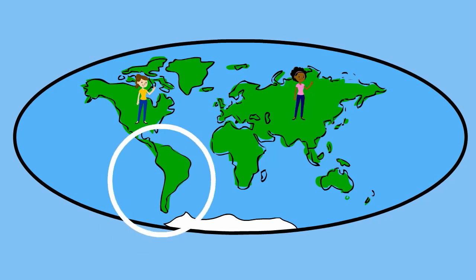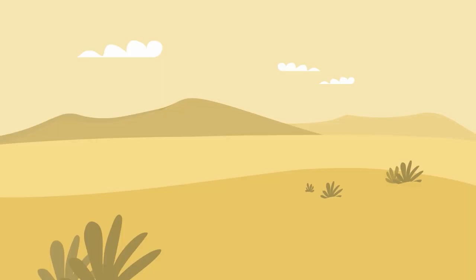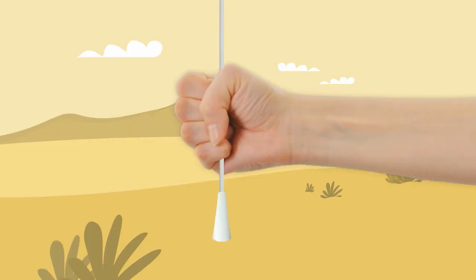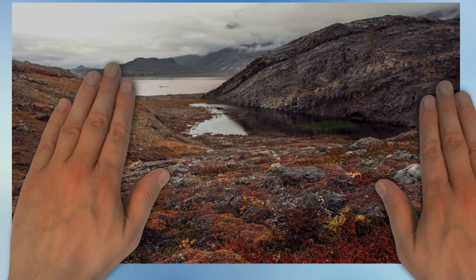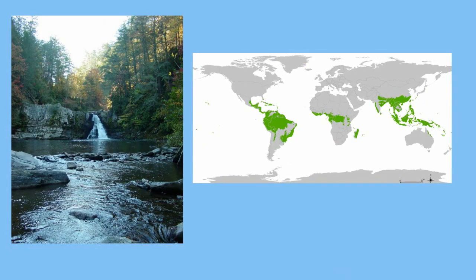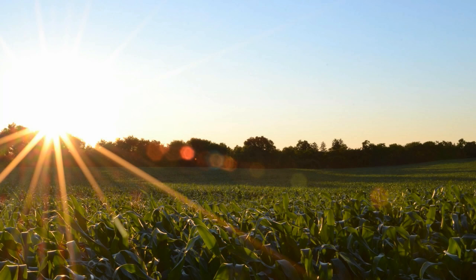Biomes are a large area with similar climate, plants, animals, and rainfall. The major land biomes on earth, also called terrestrial biomes, include the desert, tundra, deciduous forests, taiga, tropical rainforests, and grasslands. Organisms that live in each biome have adapted to the amount of rainfall and climate.